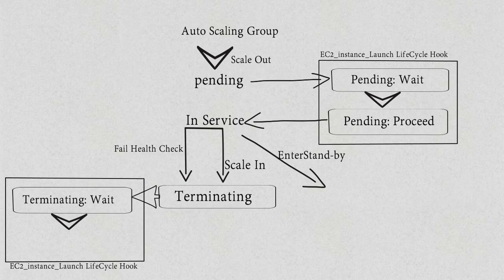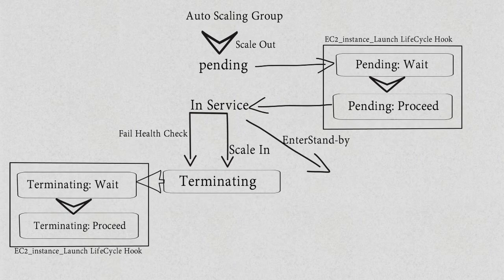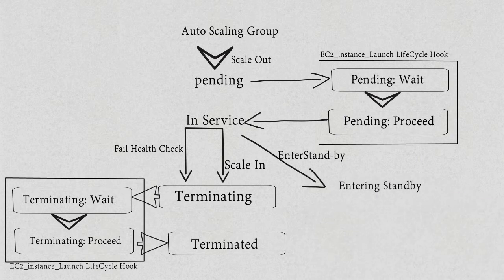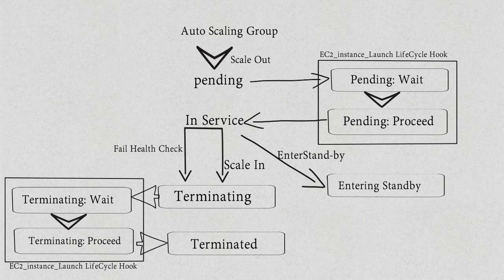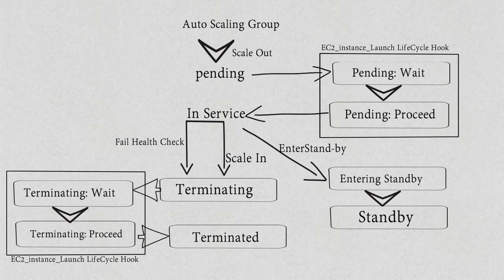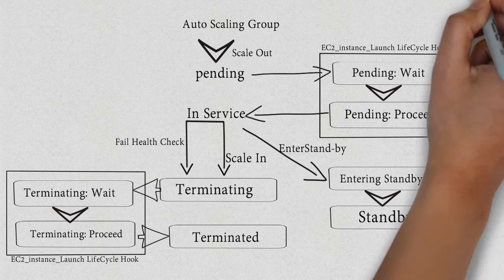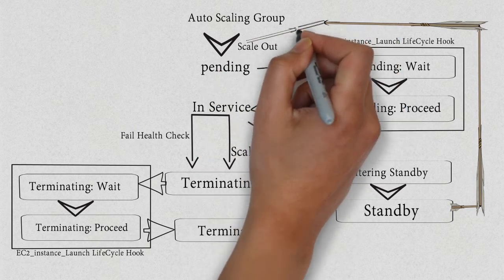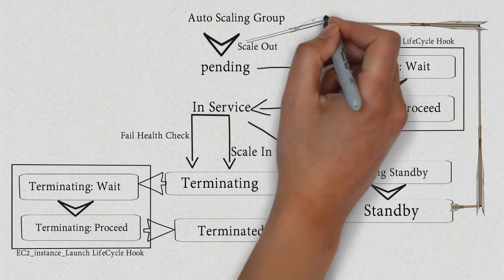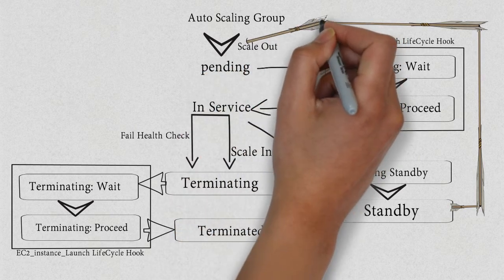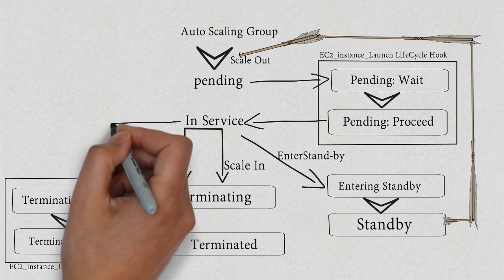Then health check: in health check status, the instance will also go into terminating mode and then it will be terminated. In the third scenario — standby — the EC2 instance enters standby and then remains in standby.